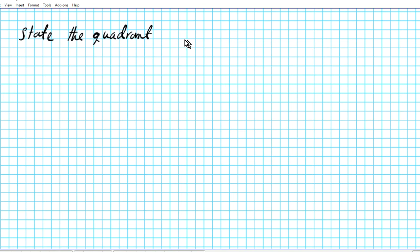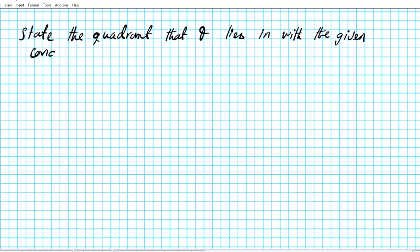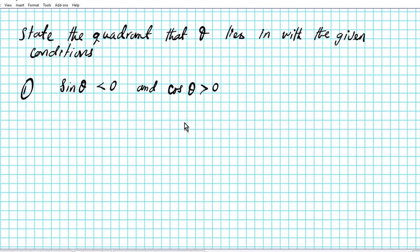The instructions for the problem we're going to be doing are as follows: we are to state the quadrant that theta lies in with the given conditions. The conditions for problem one are: sine of theta is less than zero, and cosine of theta is greater than zero. So where does theta lie? What quadrant does it lie in?